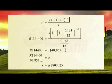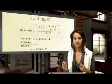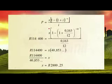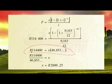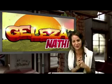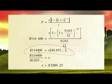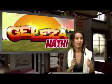Using the P formula: P = X × [1 − (1 + i)^(−n)] / i, with P = 114,400 rand, i = 0.163/12, and n = 60. Solve the right-hand side to get a numerical coefficient — approximately 40.853. Then divide: 114,400 / 40.853 = 2,800.25 rand. That is the monthly amount Tubbo will have to pay.